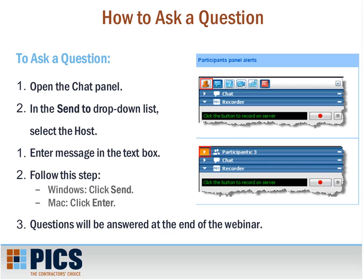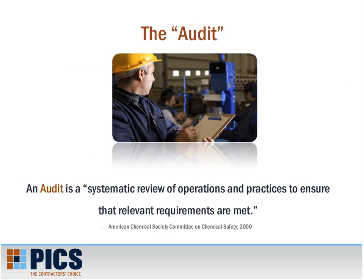To ask a question, simply open the chat panel. In the Send To drop-down list, select the host. Enter your message into the text box. If you're in Windows, click Send; if you're using a Mac, click Enter. Questions will be answered at the end of the webinar. I'll now turn the time over to Jesse to go through how to enhance audits in three steps.